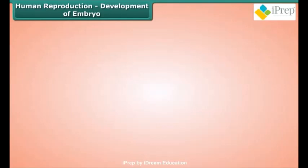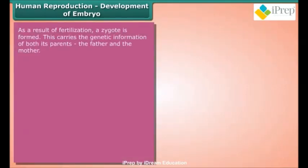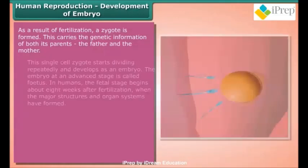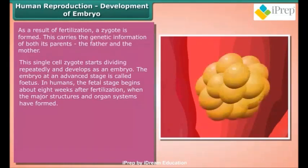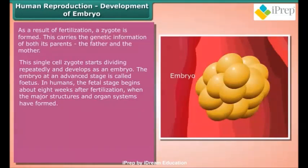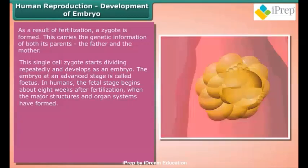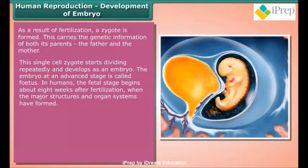Development of the embryo: As a result of fertilization, a zygote is formed, which carries the genetic information of both parents. This single-cell zygote starts dividing repeatedly and develops into an embryo. The embryo at an advanced stage is called a fetus. In humans, the fetal stage begins about eight weeks after fertilization, when the major structures and organ systems have formed.